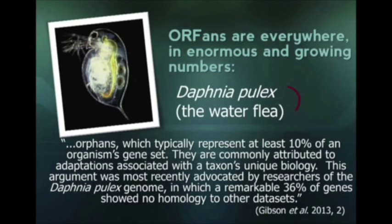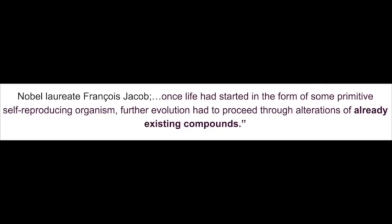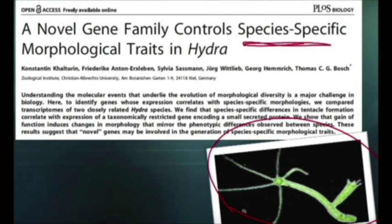This was one of the biggest surprises to come out of the whole genome sequencing project. Remember this quote by Nobel laureate Francis Jacob, who explained the accepted view of how evolution constructs new genes. He said, 'Once life has started in the form of some primitive self-replicating organism, further evolution had to produce through alterations of already existing compounds.' New genes must arise from pre-existing genes, leaving the signal of ancestry in their closely related sequences, because the probability of an alternative is basically nothing — zero. That is why the discovery of orphan genes, which show no homology to other sequences, came as a great surprise.